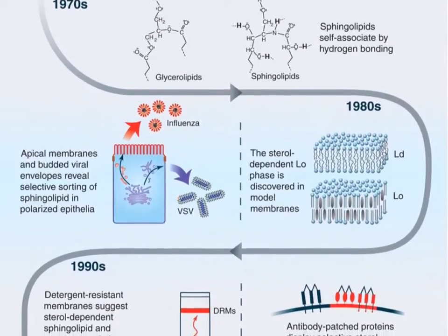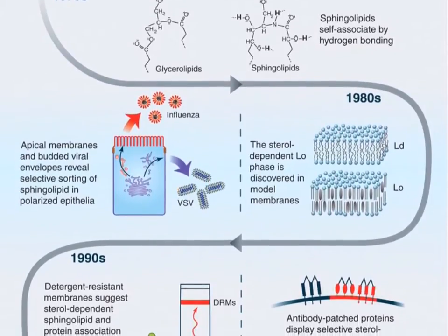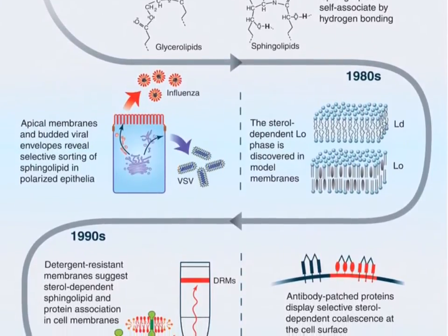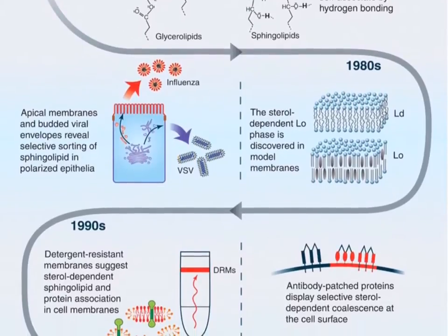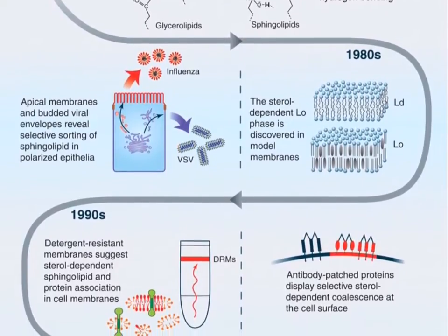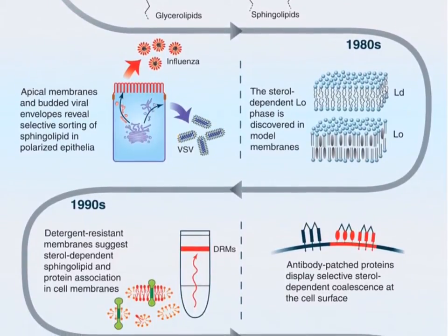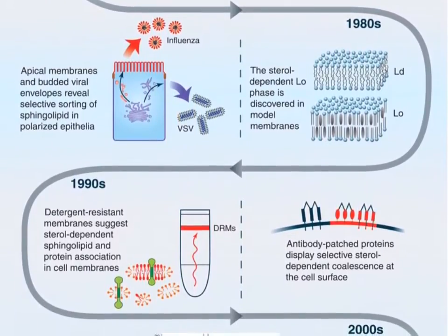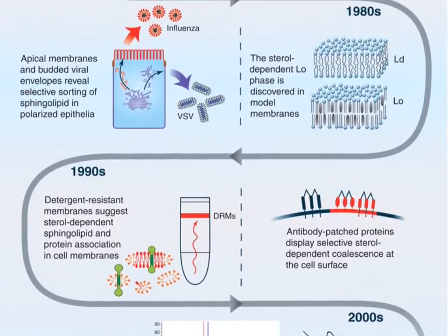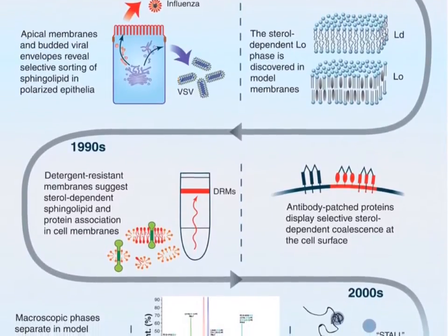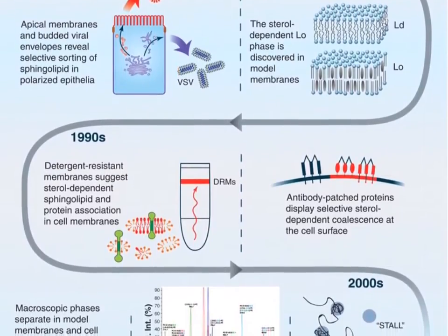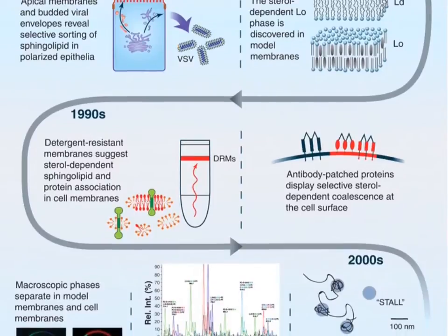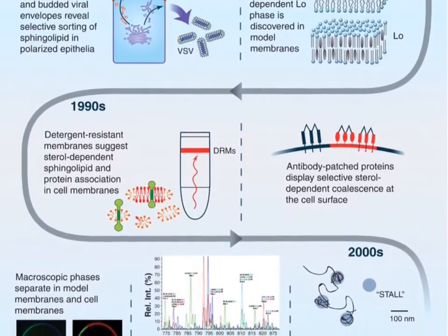In 1972, the fluid mosaic membrane model of membrane structure was proposed based on thermodynamic principles of organization of membrane lipids and proteins, and available evidence of asymmetry and lateral mobility within the membrane matrix.